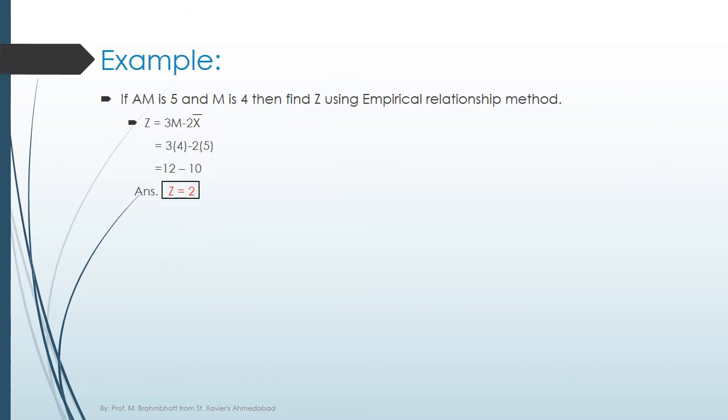Let's see the example. If AM is 5 and M is 4, then find Z using empirical relationship method.